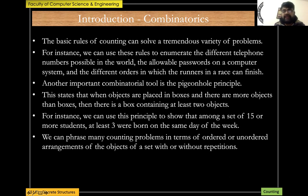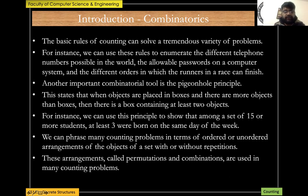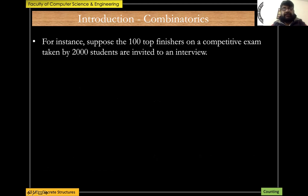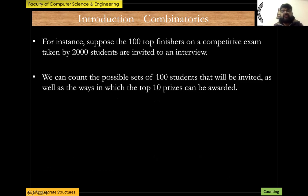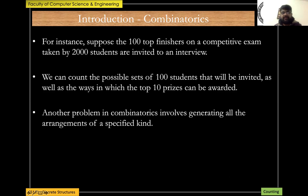These arrangements called combinations and permutations are used in many counting problems. For instance, suppose the 100 top finishers on a competitive exam taken by 2000 students are invited to an interview. We encounter the possible sets of 100 students that will be invited, as well as the ways in which the top 10 prizes can be awarded. For top 10, of course, the order matters. In the case of 100 students that will be invited for interview, the order does not matter. When the order does not matter, it's basically a combination. When the order matters, it's basically a permutation, as you already know.